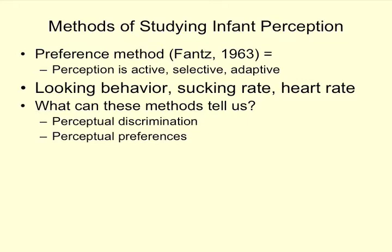Also heart rate — the physiological reaction to things. As heart rate decreases, it shows interest. So if an infant is looking at something, sucking on a pacifier to see something, their heart rate is changing. One measure is perceptual discrimination — indicating that they can tell the difference between one stimulus and another, that they notice a difference. Discrimination means noticing differences. Perceptual preferences is what they want — what they want to see, if they have some sort of choice in what they look at, what they move to by changing the pacifier rate. So: discrimination and preferences.